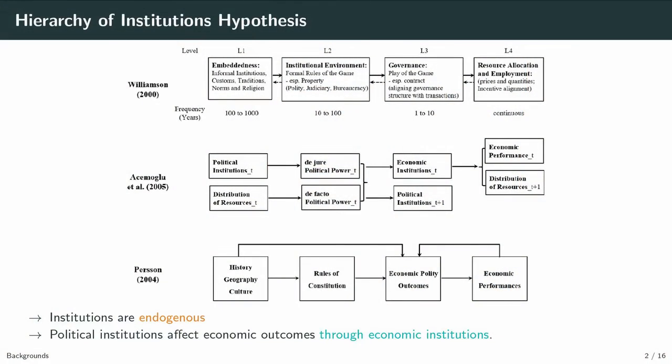The most basic assumption in this framework is that slow-moving institutions have a causal impact on the change of fast-moving institutions. The hierarchy of institution hypothesis is further developed by Moleto and Persson. The details are a bit different, but the big frame is very similar. There is a consensus in diverse theoretical frameworks saying that institutions are endogenous, and political institutions affect economic outcomes through economic institutions.